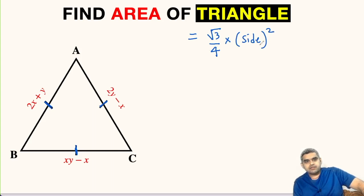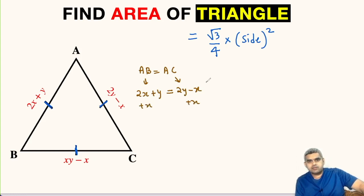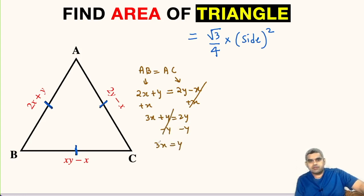The side is not given to us directly, so we need to compute the values of X and Y. Since all sides are equal, we can write AB equal to AC. Substituting, 2X plus Y equals 2Y minus X. Adding X to both sides gives 3X plus Y equals 2Y. Subtracting Y from both sides gives 3X equals Y. This is the first relation between X and Y.